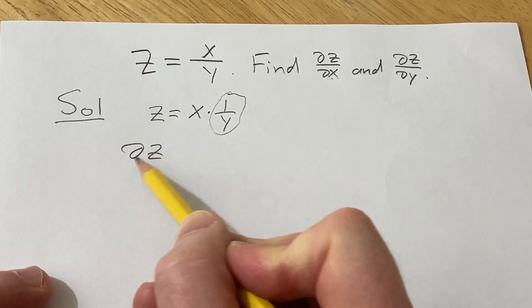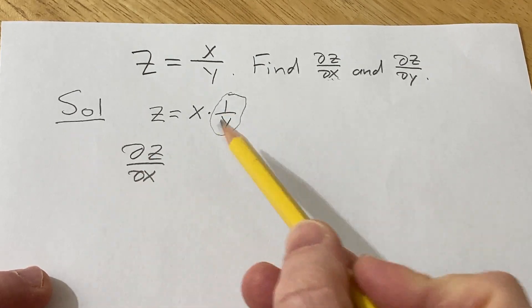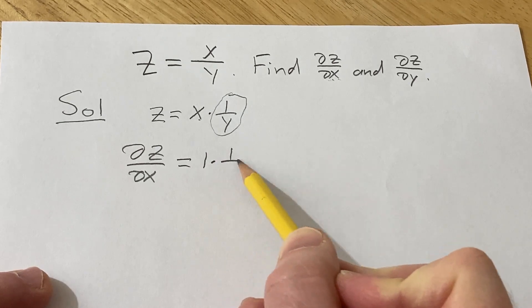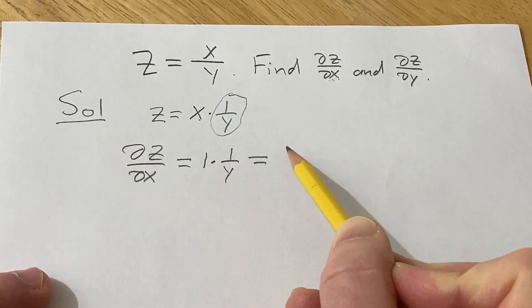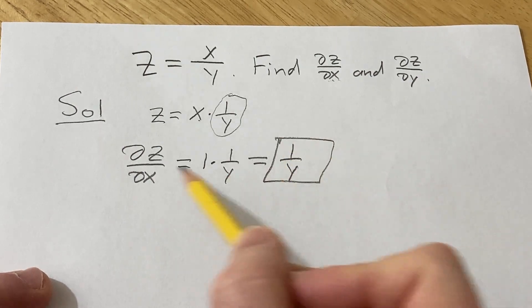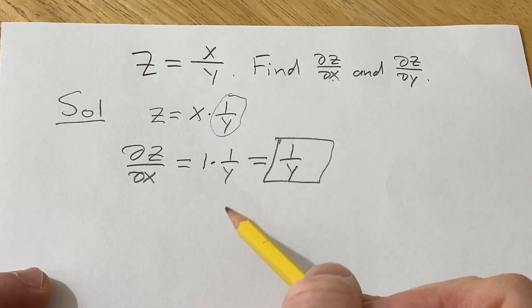So del z del x, the derivative of x is 1, and the constant just hangs out, which is 1 over y. So you just end up with 1 over y. And that would be the partial of z with respect to x.